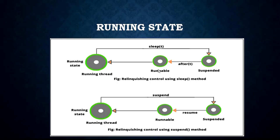A thread can come into the Running state only from the Runnable state. A running thread may give up its control and enter into the Blocked state in several situations. For example, when the sleep method is invoked, the thread sleeps for a specified time period and is out of the queue during that time. Then the thread re-enters the Runnable state as soon as that time period elapses.